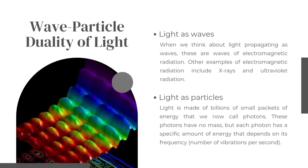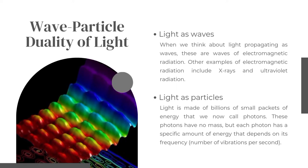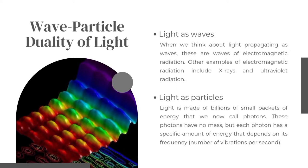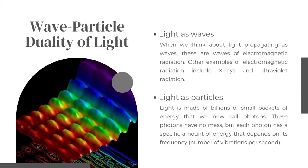Wave-particle duality of light. When we think about light propagating as waves, these are waves of electromagnetic radiation. Other examples of electromagnetic radiation include X-rays and ultraviolet radiation. Light is also made of billions of small packets of energy that we now call photons. These photons have no mass, but each photon has a specific amount of energy that depends on its frequency — the number of vibrations per second.